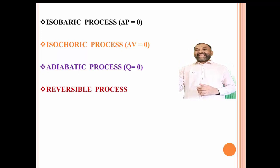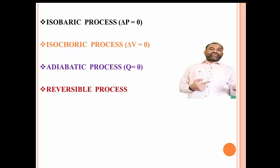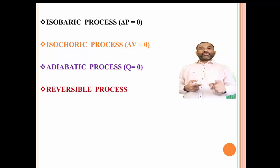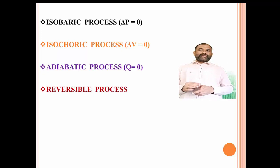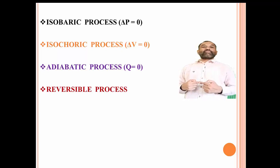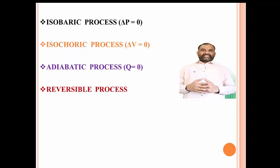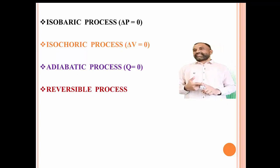An important process is the adiabatic process. In this process, heat cannot be exchanged from the system to the surroundings or from the surroundings to the system — that is Q equals zero. Here, T1 is not equal to T2, because for an exothermic reaction the temperature of the process can increase, or for an endothermic process the temperature can decrease. Hence, the change in temperature delta T is not equal to zero.